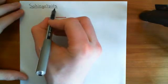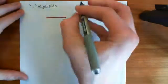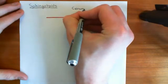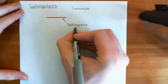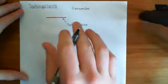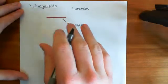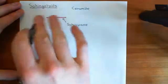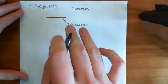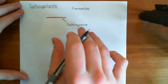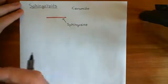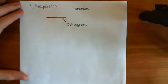To create a sphingolipid, you start by creating something called a ceramide. The first thing to say is that sphingosine is a set molecule — there's one sphingosine molecule. There are different optical and stereoisomers of it, but it is one molecule. It's not like the triacylglycerols, where you don't even know what the long-chain carboxylic acids are.